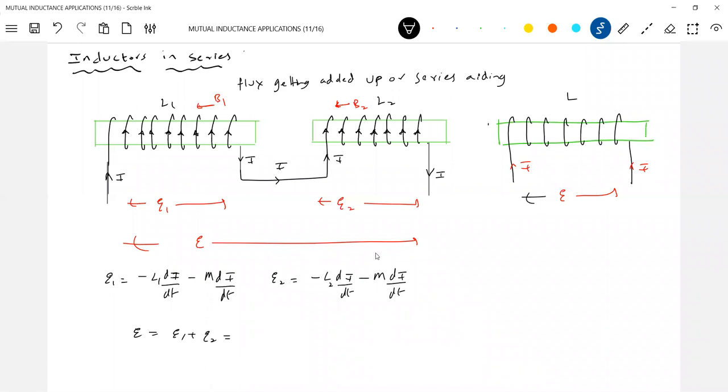E1 plus E2. So straight away, this I'll write it as minus of, negative sign I'll take common, minus di by dt, L1 plus L2 plus 2M. And looking at this diagram, what is E, you can write L di by dt.